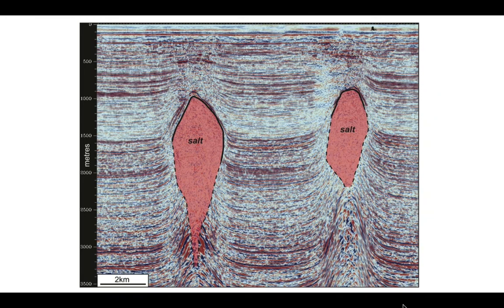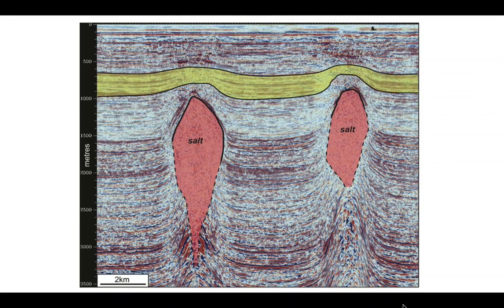Let's build an interpretation of this. I think it's useful to start shallow and move deep, so let's pick a shallow package across here, which we can see is bulged across the top of the salt bodies, with slightly increased thickness in the synclines adjacent to the salt.